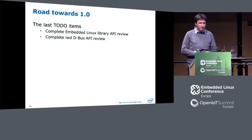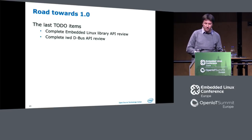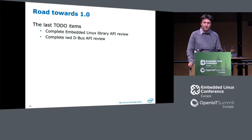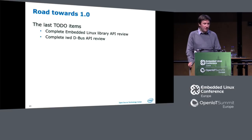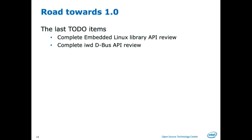We have two big to-do items to get sorted out. One is the Embedded Linux Library API review — we need to be happy with that API so we can do an ELL 1.0 release at the same time as IWD 1.0. Then we want another review of the IWD D-Bus APIs, because once we declare them stable, Network Manager and others will be relying on them and we can't easily break them anymore. Those are the next two big things that have to happen before we call this 1.0.